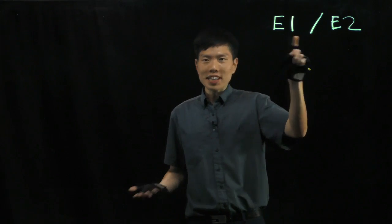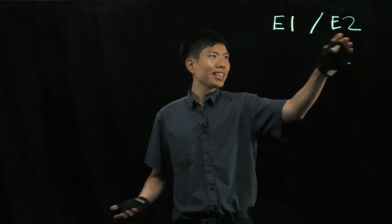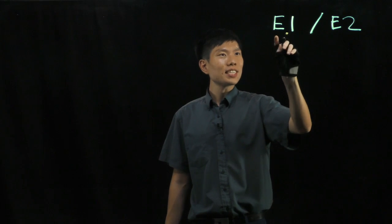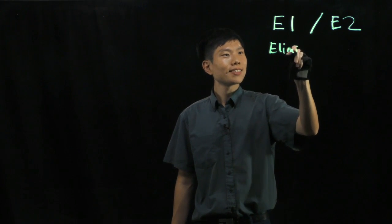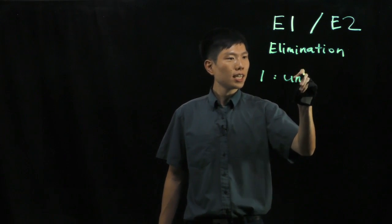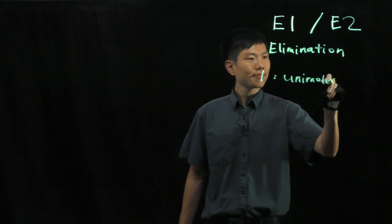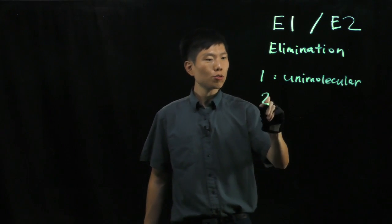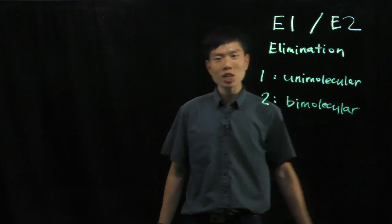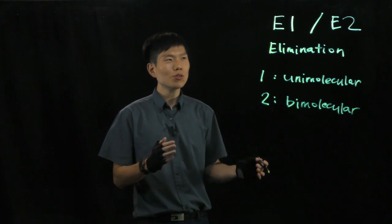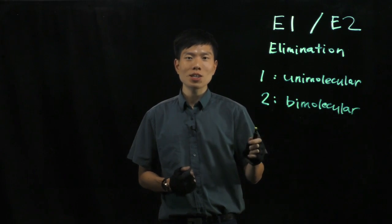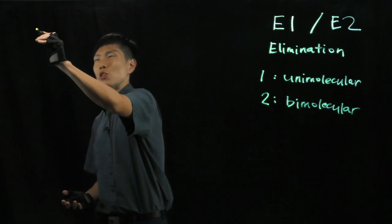Does it remind you of anything? A letter with a 1 and a letter with a 2 — remember your SN1, SN2? They're very similar. In this case, the E stands for elimination, and the 1 means it's unimolecular, and 2 means it's a bimolecular reaction. Just like SN1 and SN2, the 1 also means the order of reaction is 1, and 2 means the order of reaction is 2.